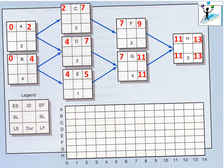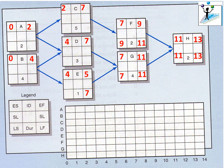Moving backwards, the late finish time for Activity G is eleven weeks and the late start time is seven. For Activity F, the late finish is also eleven — inherited from Activity H — and the late start is nine. For Activity E, the late finish is seven, which is the late start time for Activity G, and the late start is seven minus one, which is six.